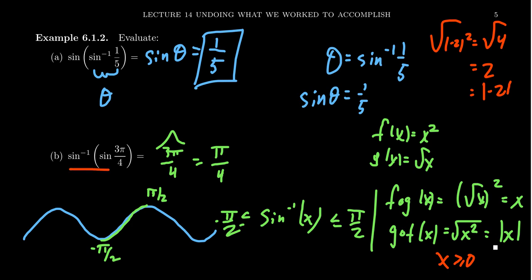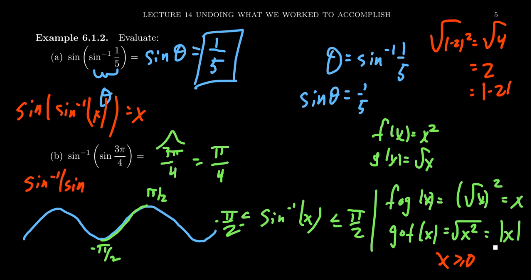The same phenomenon happens with trig functions. Sine of sine inverse of x always equals x — and that's true for cosine and tangent with their inverses too. But sine inverse of sine of θ is not always θ; their composition gives the reference angle of θ. If θ is already between −π/2 and π/2, nothing changes. But when you get something like 3π/4, which is outside that range, you have to take the reference angle. That's the only hiccup to watch out for when doing calculations with inverse trigonometric functions.